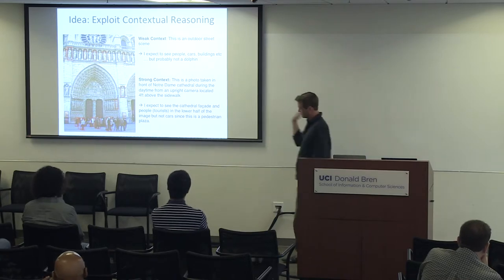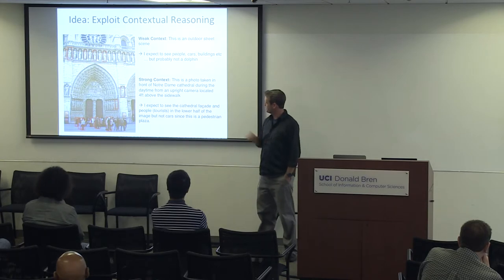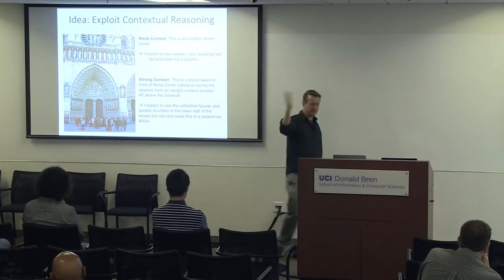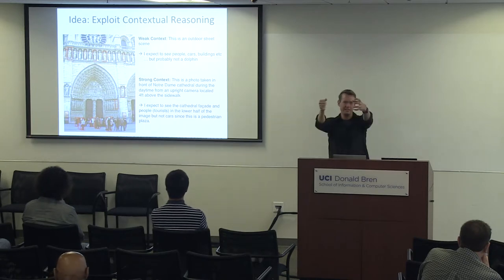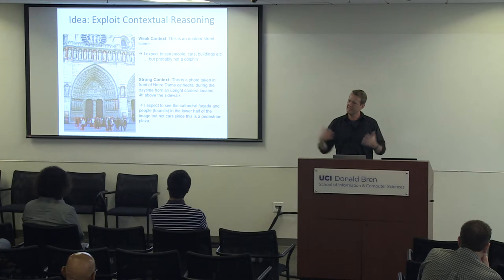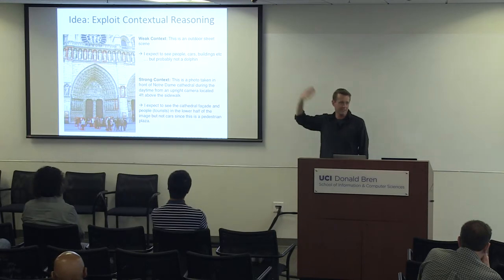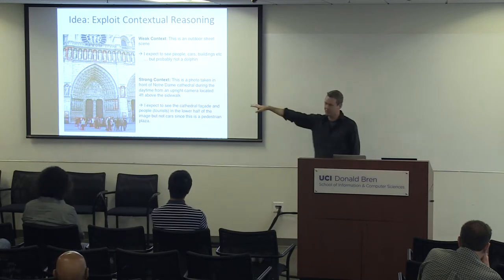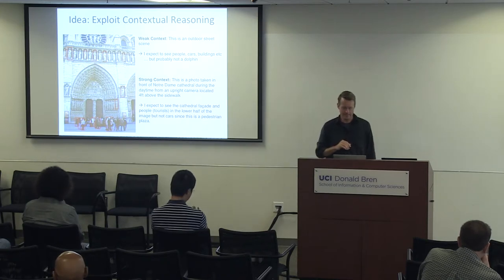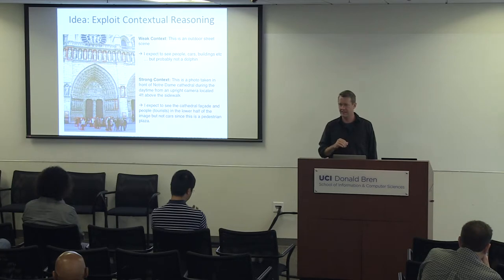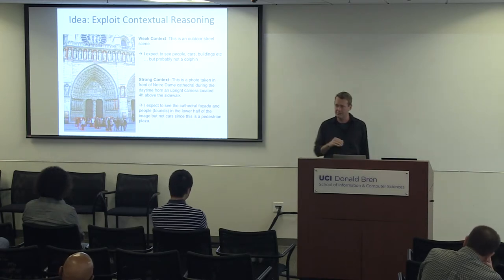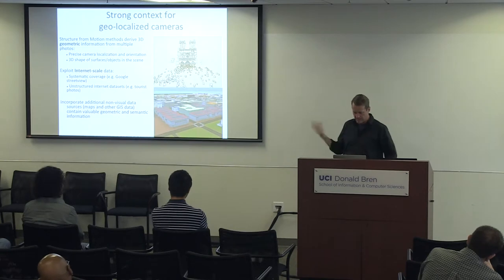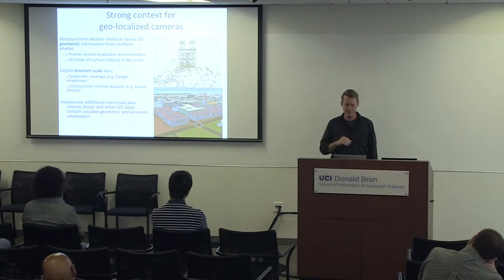To get that strong embodied context, I need to incorporate several pieces of information: where is my camera in the world, and some kind of model of the world out there in space. I know what the facade of this cathedral looks like, so I can tell my detector not to fire on that facade, and I know people should appear in the lower half of the image. An area of interest for us is how to build up that strong geometric context — how to localize cameras in the world and how to make use of that.